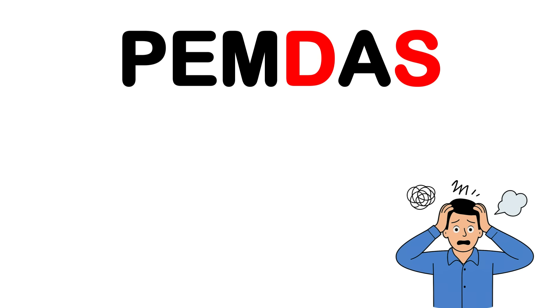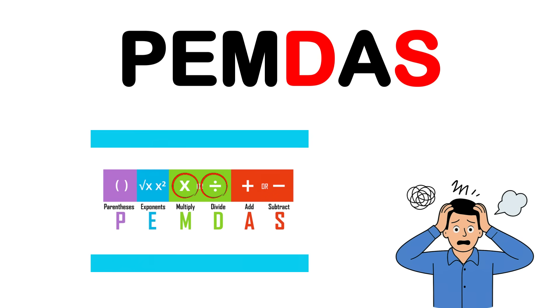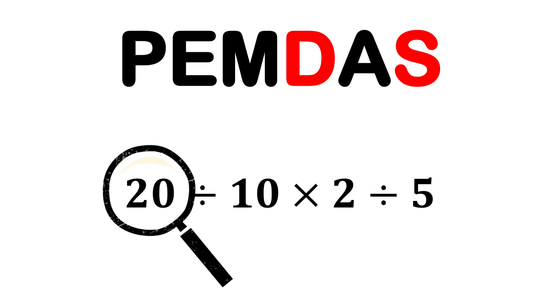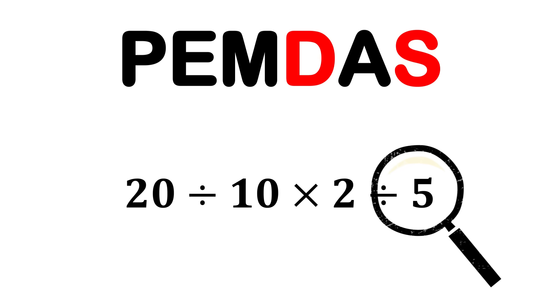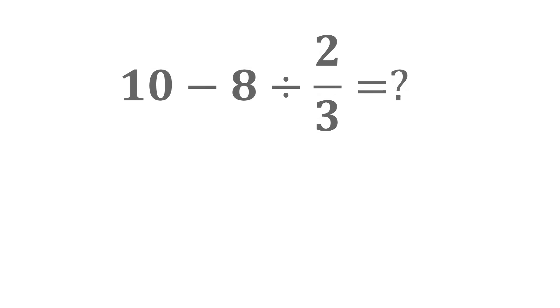But here's the part where many people get confused: multiplication and division share the same rank, and addition and subtraction also share the same rank. This means you don't always multiply before you divide, and you don't always add before you subtract. You simply scan the expression from left to right and perform whichever operation shows up first at that level.